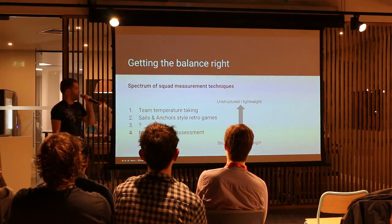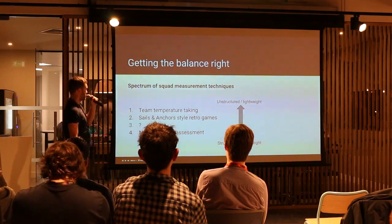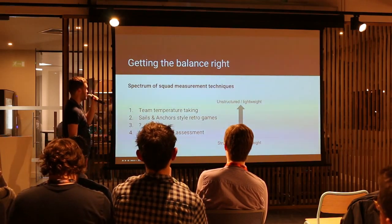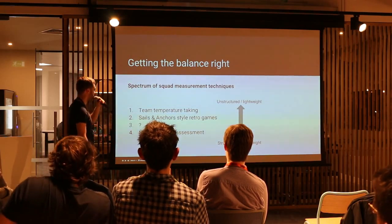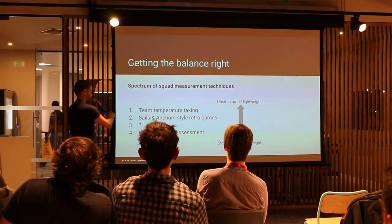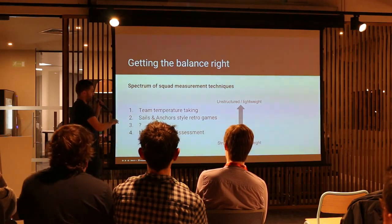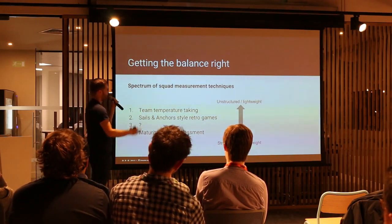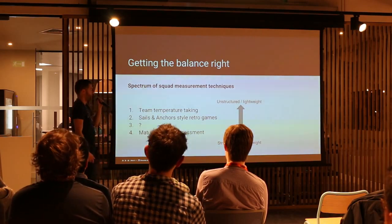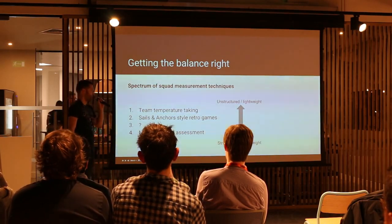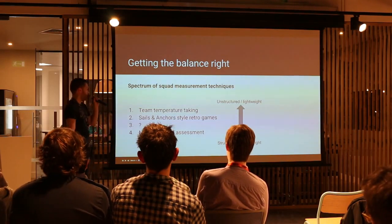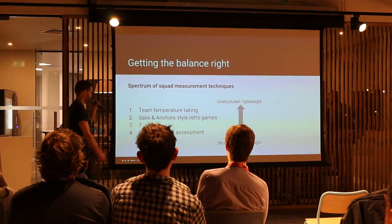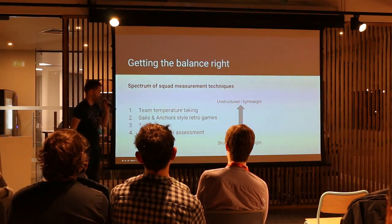So we needed to get the balance right — something more repeatable. I've come up with a spectrum of squad measurement techniques. Towards the lightweight end, we have things like team temperature taking: unstructured, lightweight, something you can repeat very frequently. You also have the sailor and angular star gate approach. And then on the other end of the scale, we have the heavyweight maturity model. We needed something that was going to hit the sweet spot.